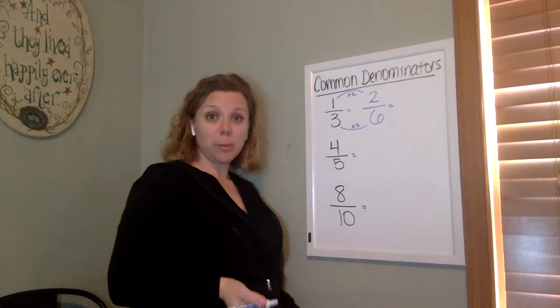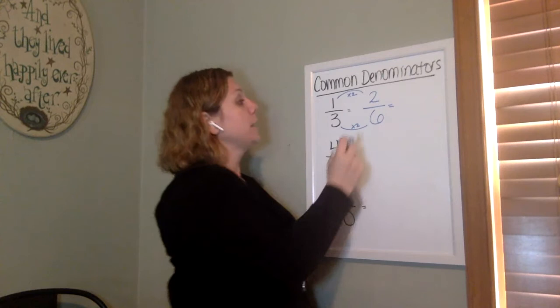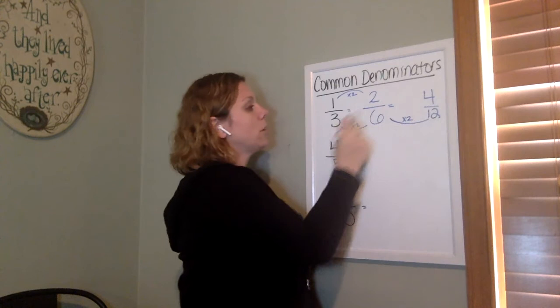I could also multiply this by four or by five. As long as I do the same thing to the top as I do to the bottom, they will still be equivalent. From here I could multiply these times two again. So then I would get six times two is 12 and two times two is four. So all of these are equivalent fractions.